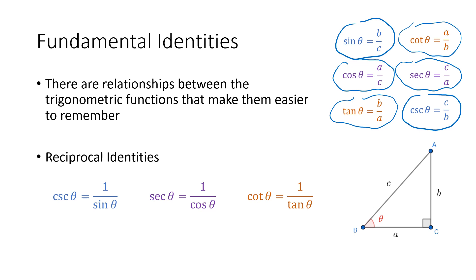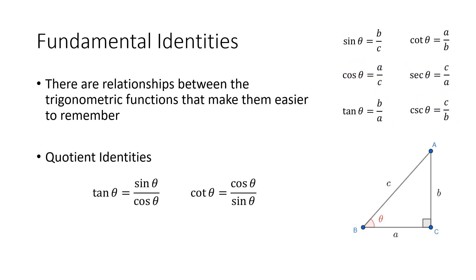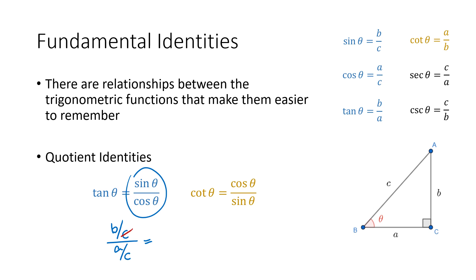So we've got three reciprocal identities based on those relationships. Another relationship that we see here are quotient identities. I've color-coded these for you. Sine of theta is b over c, so when I say sine of theta divided by cosine of theta, that's b over c divided by a over c. If I multiply top and bottom by c, the c's will divide out, and I get b over a, which is the tangent of theta.